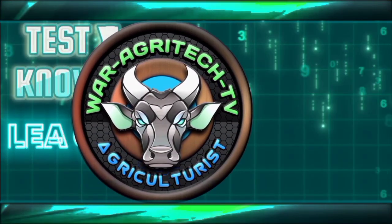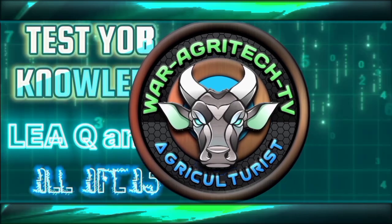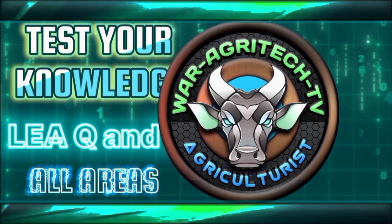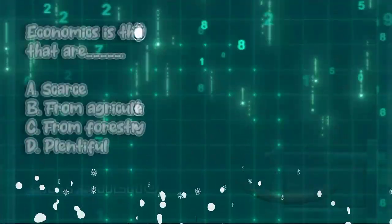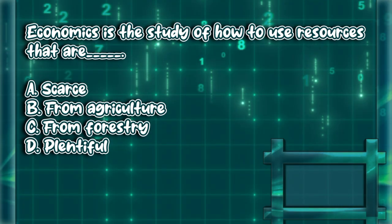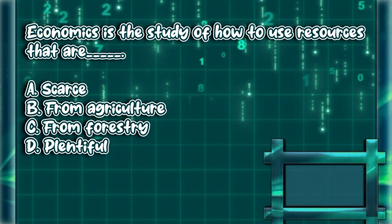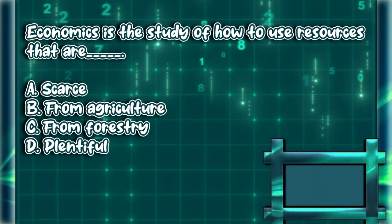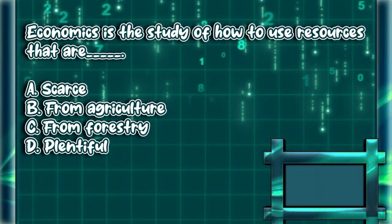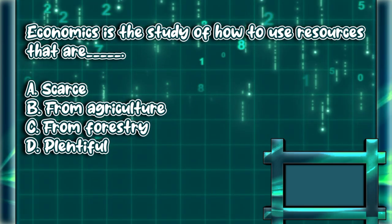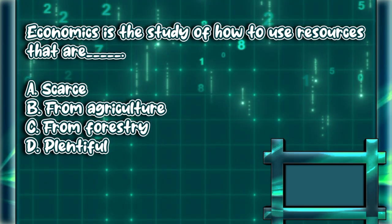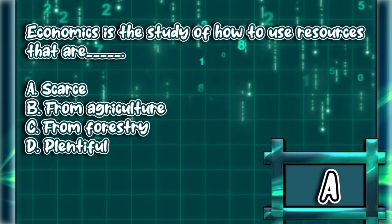Test your knowledge — Leah Q&A, all areas. Here we go. Economics is the study of how to use resources that are: a) scarce, b) from agriculture, c) from forestry, d) plentiful. The answer is letter A.